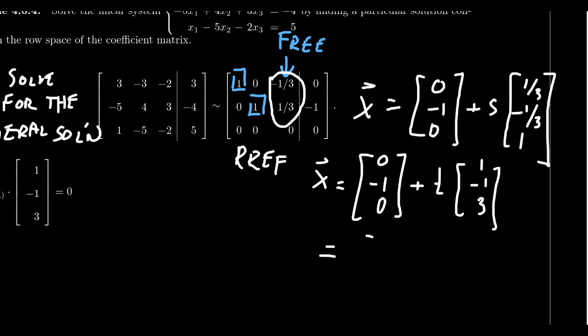All solutions to the system will look like [T, -1-T, 3T]. Every solution. So in particular, X-row is going to look like this because that's a particular solution. We're just looking for the shortest one.